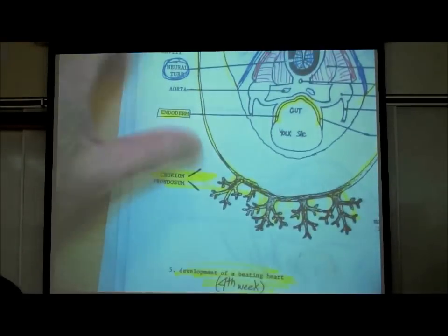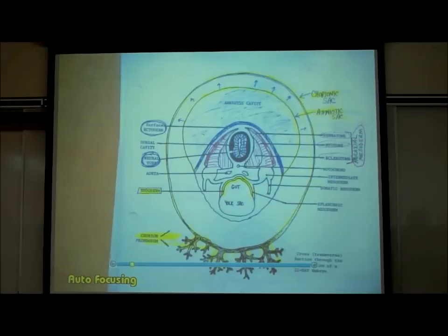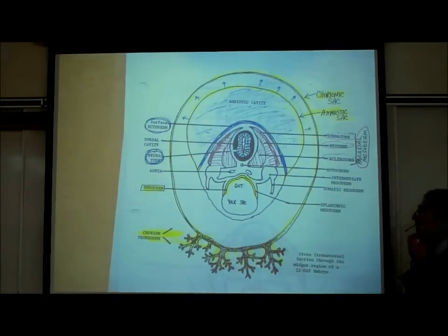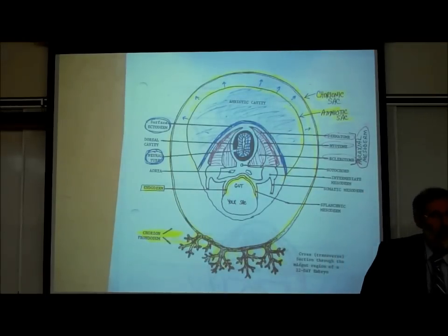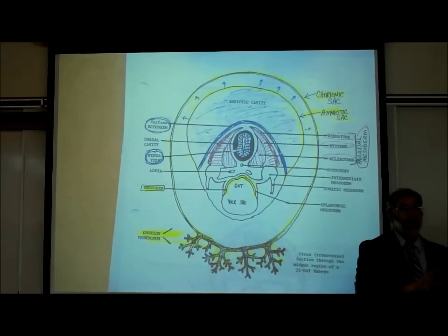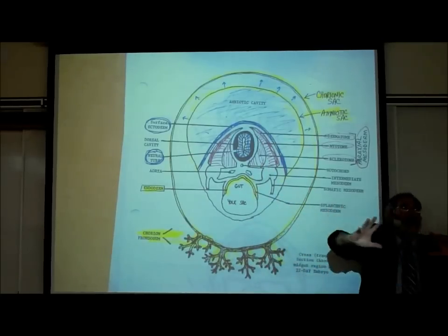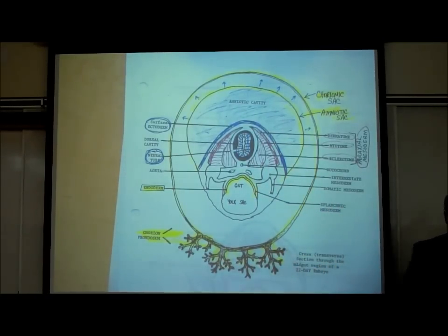On page C13, I'm not asking you to know this picture at all. However, I do want you to know the pictures on pages C16 and C17. It's easier if I show you some intermediate stages to see how we got to those pictures. This is a continuation of what we saw on C10 — that was the third week. This is a cross-section through the middle of the embryo, approximately a 22-day-old embryo.